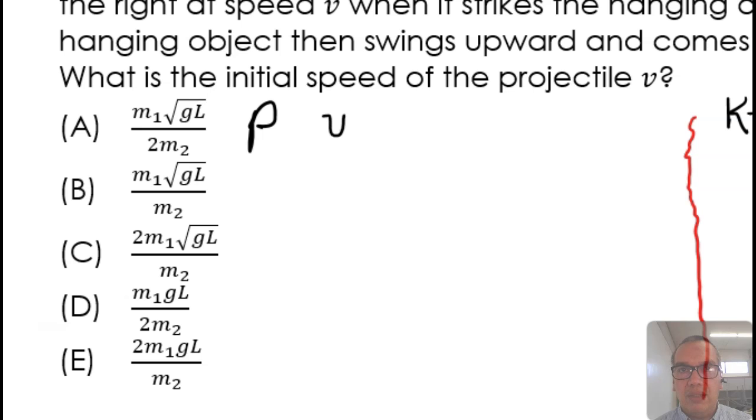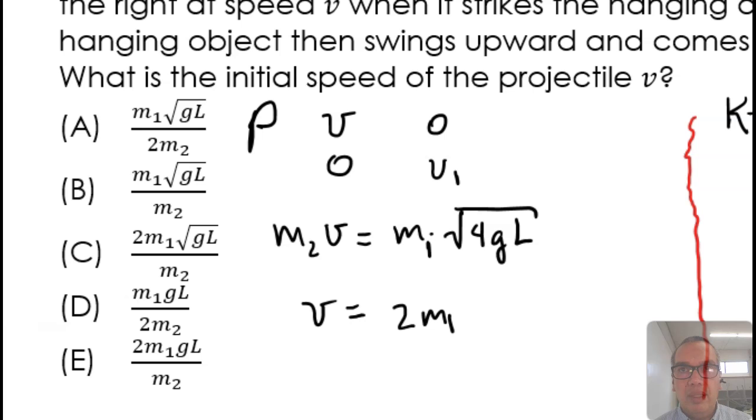The initial velocity of M1 is 0 and the final velocity is V1. Making appropriate substitutions, we have m2v is equal to m1 square root of 4gL. Therefore, v is equal to 2m1 times the square root of gL over m2. This is option C.